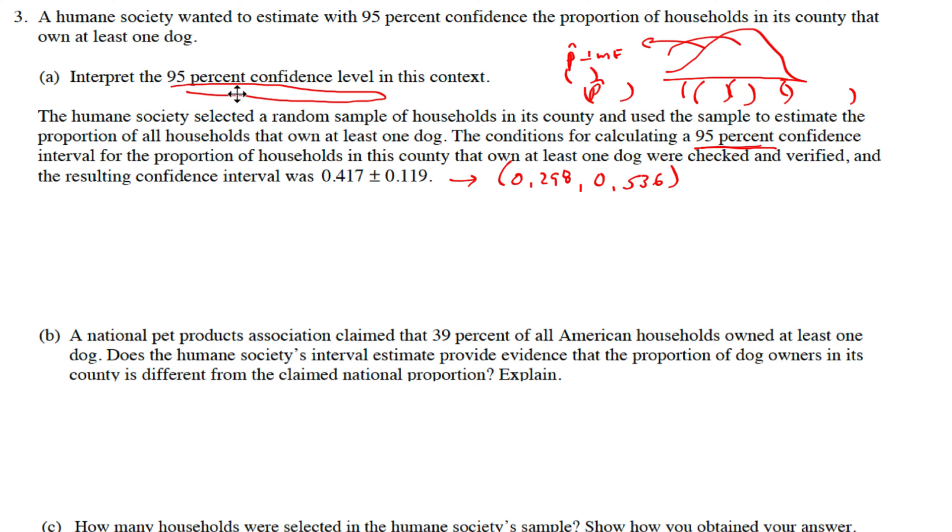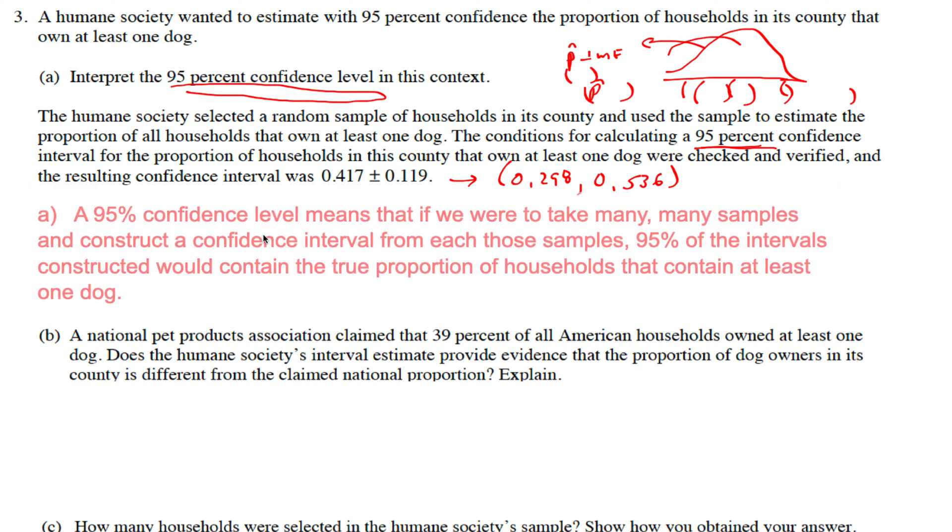They're testing to see if you understand that confidence level. So, a 95% confidence level means that if we were to take many samples and from those samples construct a confidence interval, 95% of those intervals constructed would contain the true proportion of households that contain at least one dog. If I were to construct lots of intervals, 95% would be winners, but 5% would not contain the true proportion.